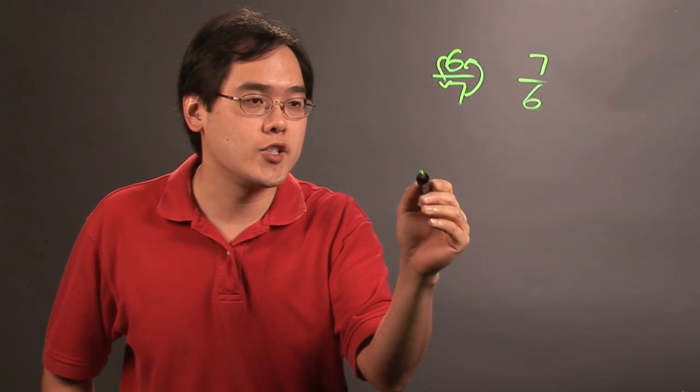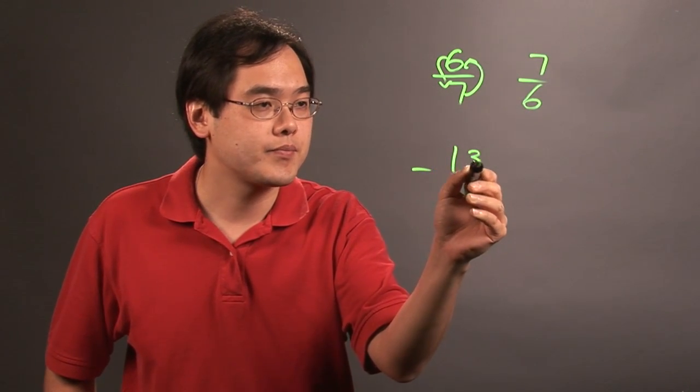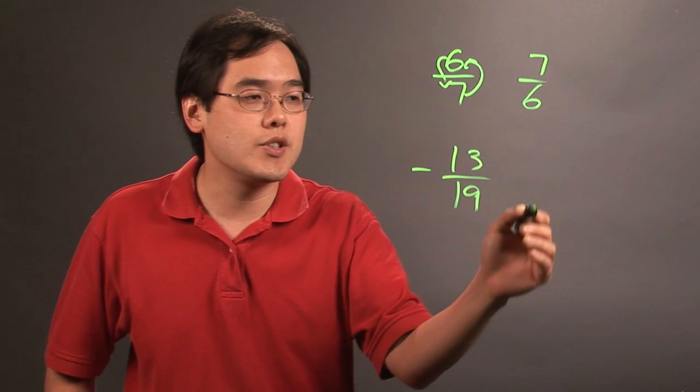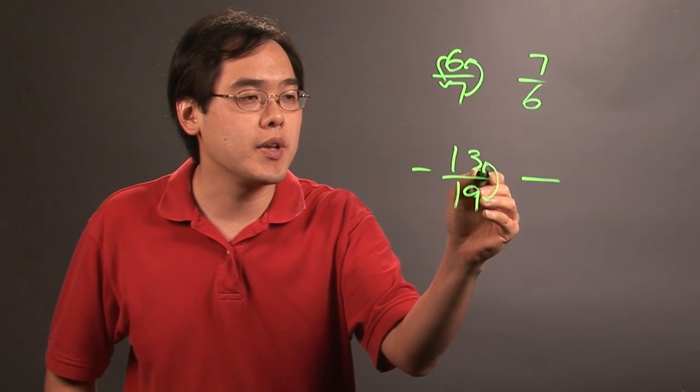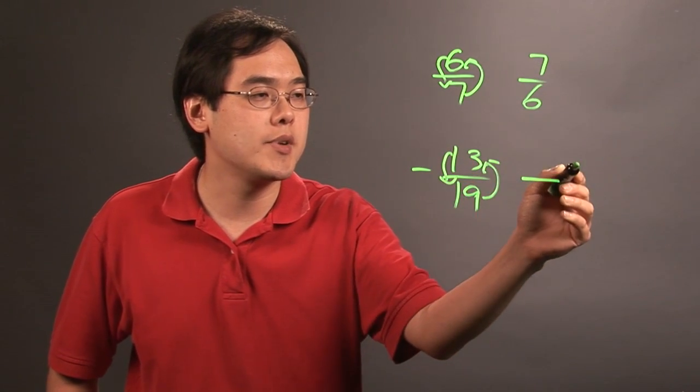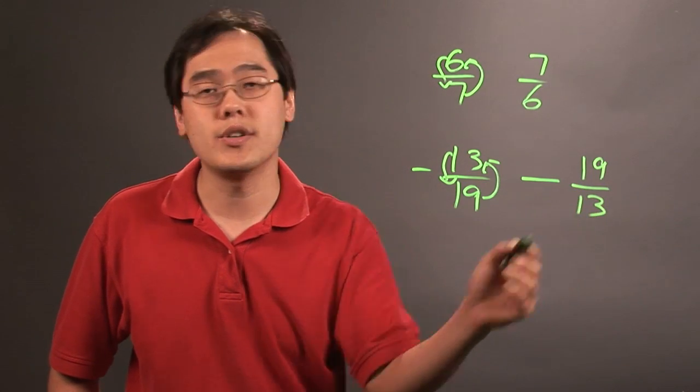Now same thing if you have negative fractions. If you have, let's say, negative 13 over 19, what you can do is you keep the negative as is, and you're just flipping the numerator and denominator. So that ends up being negative 19 over 13.